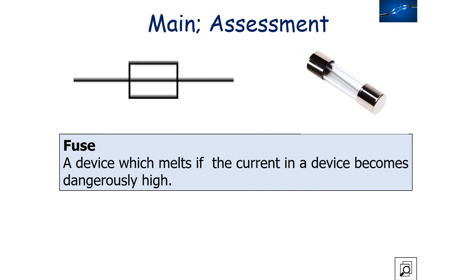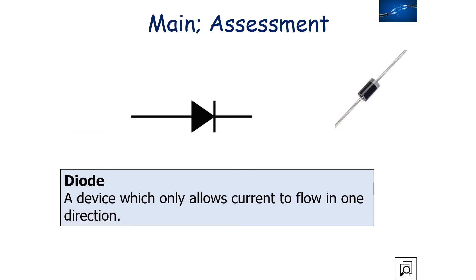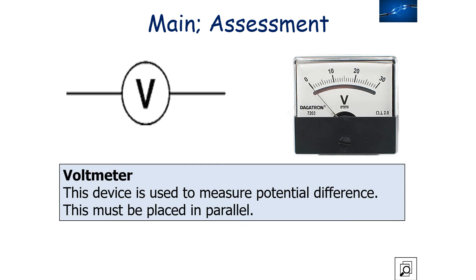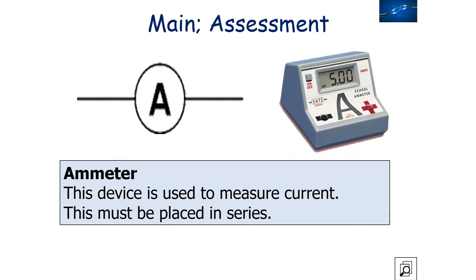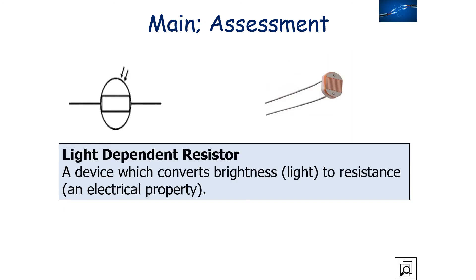A fuse is a device which melts if the current becomes dangerously high. A diode only allows current to flow in one direction around the circuit. A voltmeter is used to measure potential difference in an electrical circuit and must be placed in parallel. An ammeter is used to measure current in an electrical circuit and must be placed in series. A light dependent resistor, or LDR, converts brightness or light intensity to resistance.